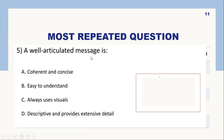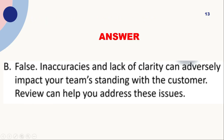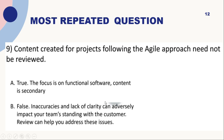Most repeated question: 'A well-articulated message is?' Options: A) Coherent and concise, B) Easy to understand, C) Easy to understand and always uses visuals, D) Descriptive and provides extensive details. The right answer is A and B — coherent and concise. Another repeated question: 'Content created for projects following the agile approach need not be reviewed — True or False?' The correct answer is False — inaccuracies and lack of clarity can adversely impact your team's standing with the customer, and reviews help address these issues. Therefore, before presentation, you need to review agile approach content.